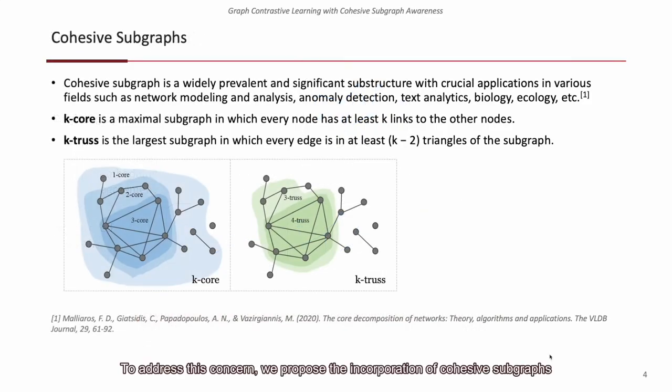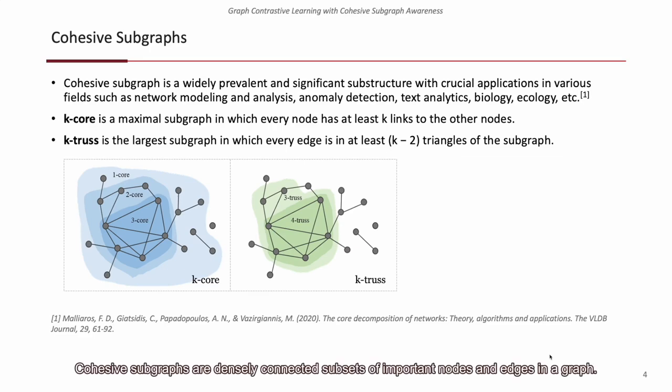To address this concern, we propose the incorporation of cohesive subgraphs as a guide for topology augmentations. Cohesive subgraphs are densely connected subsets of important nodes and edges in a graph.